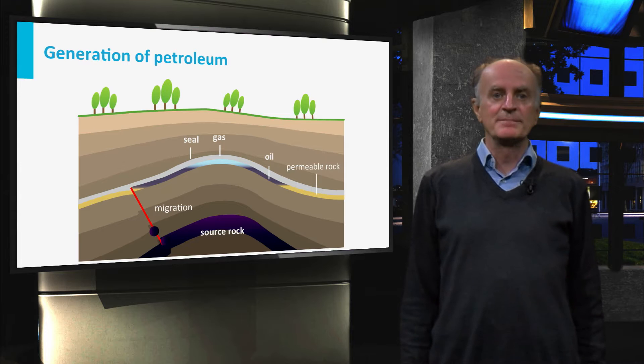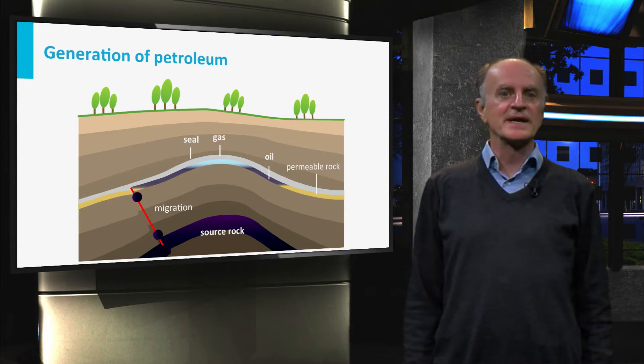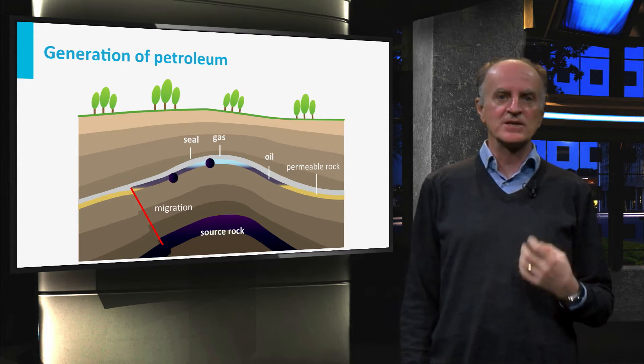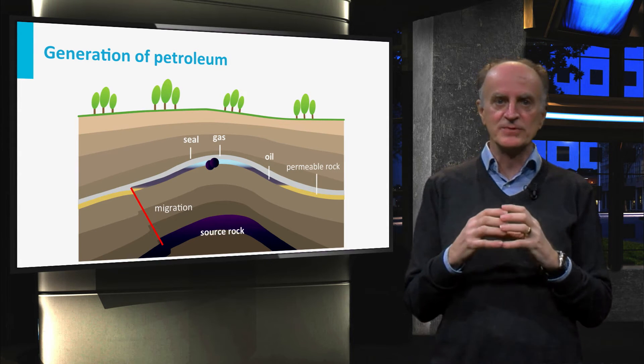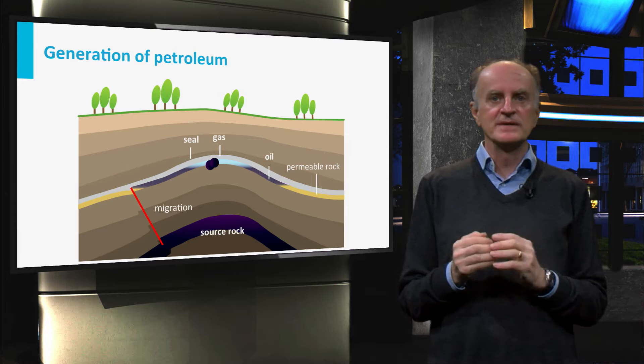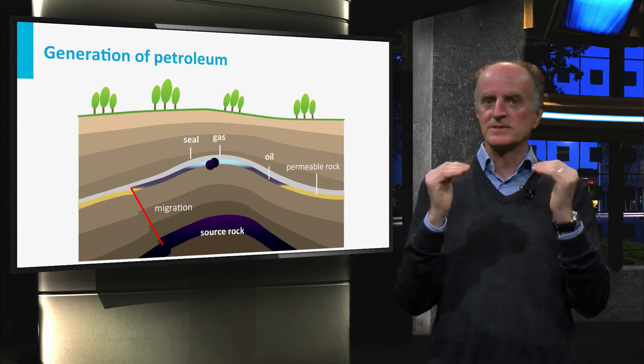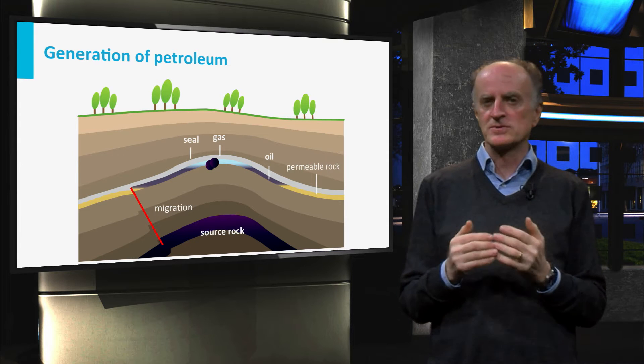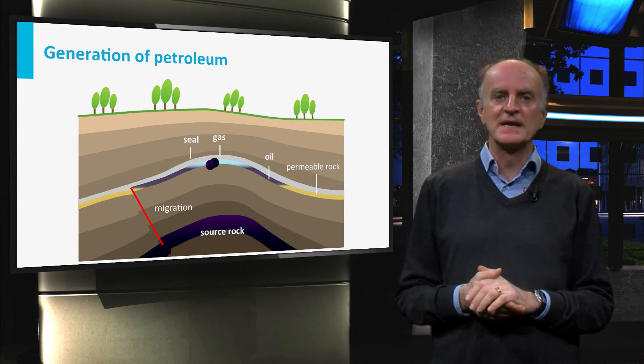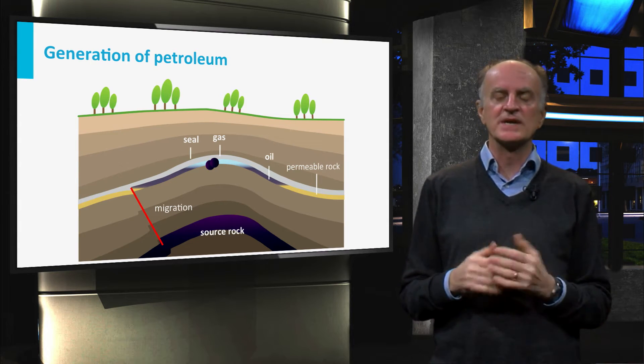We have seen in the previous clip how sediments with high organic content are formed. Large molecules of organic matter called kerogen are trapped into the rock. However, if these sediments remain close to the surface where they have been deposited, no petroleum is created because kerogen cracking only becomes efficient when rocks reach a higher temperature.